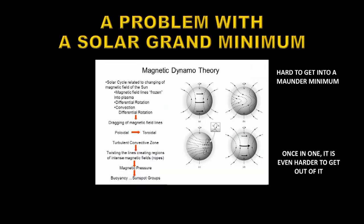The solar dynamo theory starts with a simple north-south solar field at solar minimum. Differential rotation of the Sun winds up that magnetic field, making it stronger, eventually causing the field to kink and become buoyant, floating to the surface and becoming visible as sunspots. Those surface features then cancel — trailing parts with the polar regions and leading parts with each other across the equator — until you end up with a simple north-south polar field again, now reversed. The process then repeats, giving the 11-year solar cycle and the 22-year magnetic cycle.